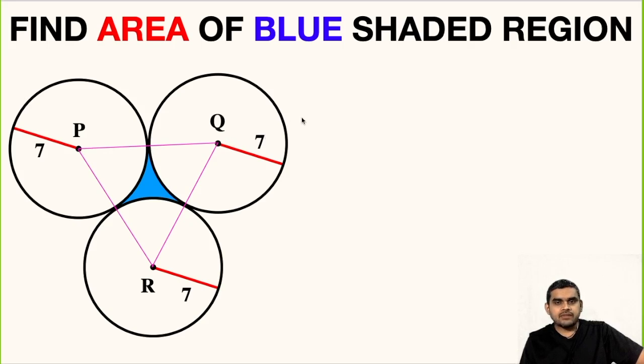Because we have learned a theorem, and according to that theorem, if we have two circles touching each other, then if we join their centers—suppose this is C1 and this is C2—then this line segment C1-C2 will also pass through the point of contact. So using this theorem, we get information that P-Q is a straight line; also Q-R and P-R will be straight lines.